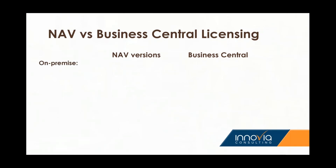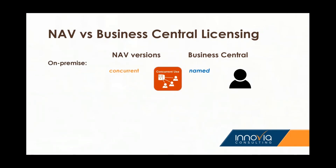One of the biggest differences between the NAV versions and Business Central is that on the on-prem versions with NAV, we were able to use concurrent users. What that means is that you could utilize one user license for multiple users — you could only have one person using it at a time, but you could have 10 people set up and any of those 10 could use that one license. Now with Business Central, we've moved to what we call a named model, and each user will now need to have a named user license.